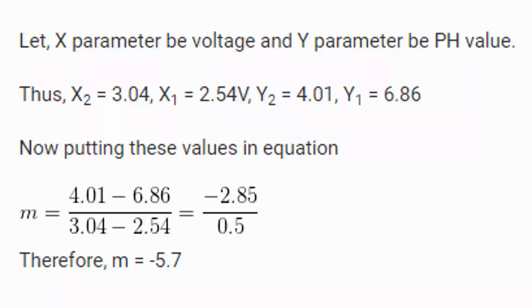Thus, x2 equals 3.04, x1 equals 2.54, y2 equals 4.01, and y1 equals 6.86. Now, putting these values into the equation m equals y2 minus y1 by x2 minus x1, by calculating, we found m equals, that is slope equals minus 5.7.